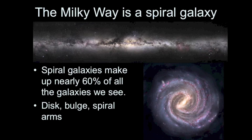Spiral galaxies make up about 60% of the galaxies in our local universe, the ones that are easily seen through a telescope. Spiral galaxies are generally made up of a disk of stars, gas and dust, a bulge near the center, and spiral arms.